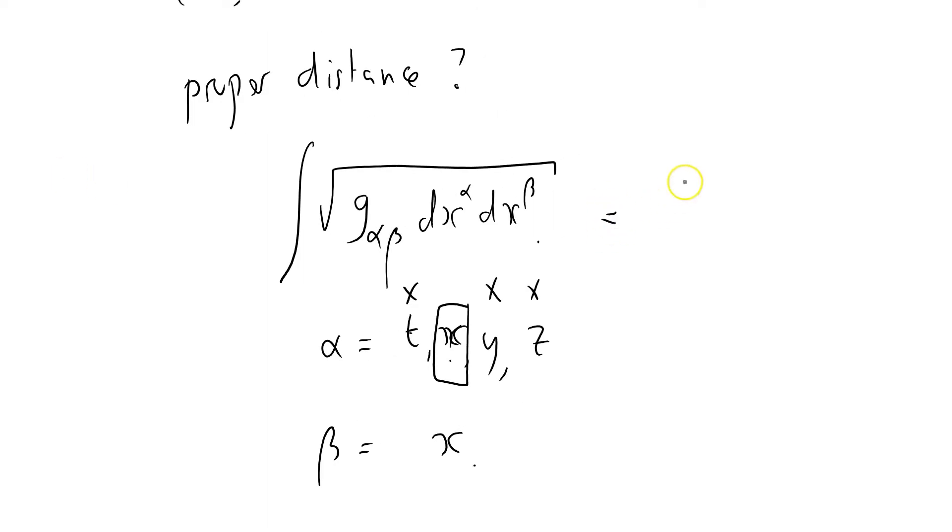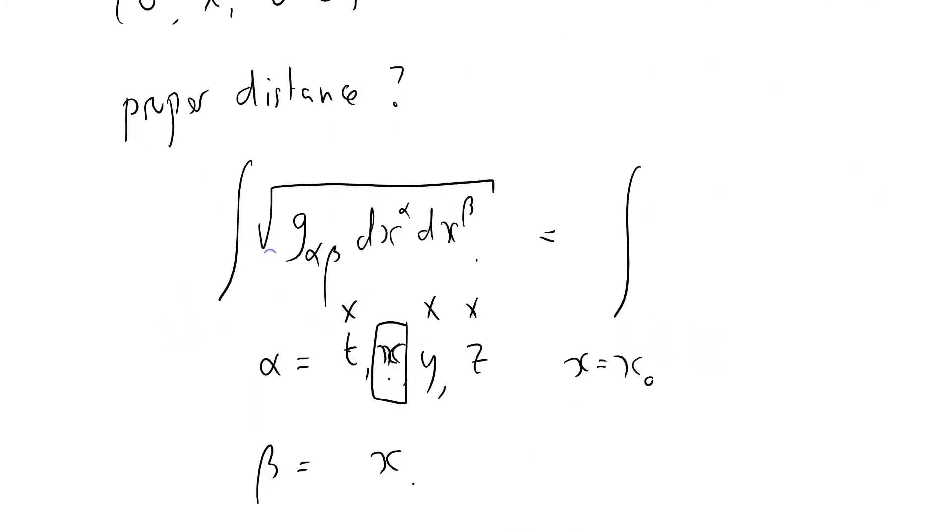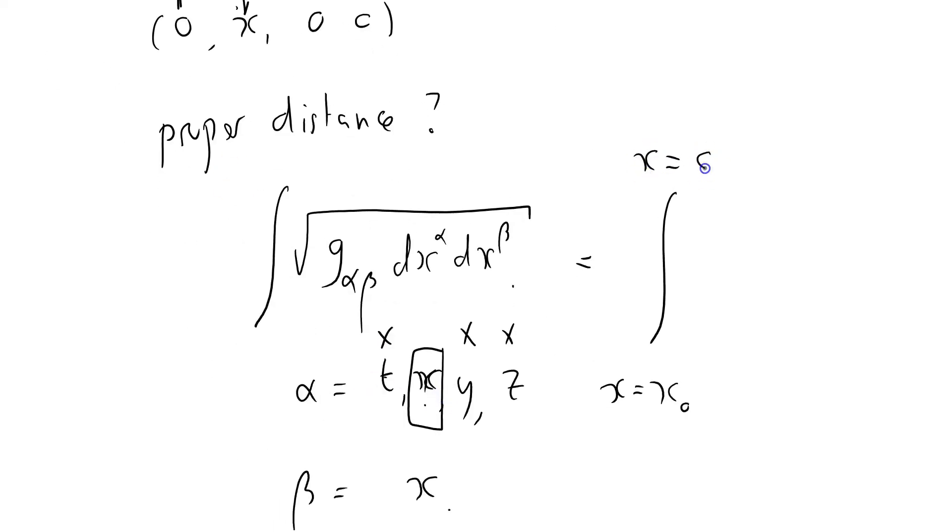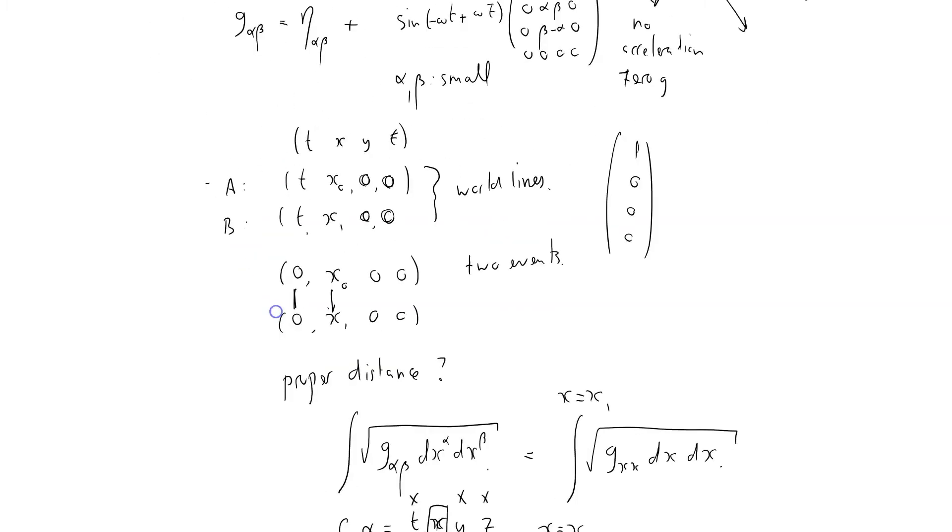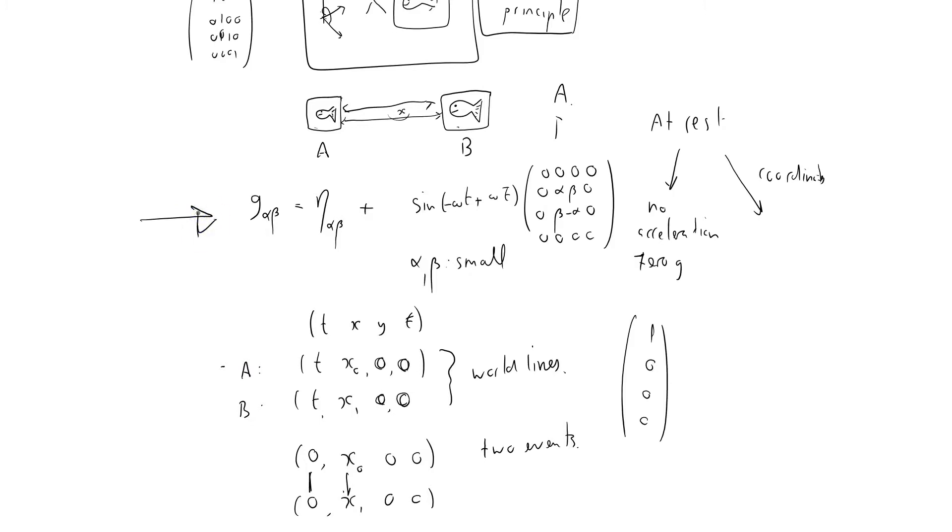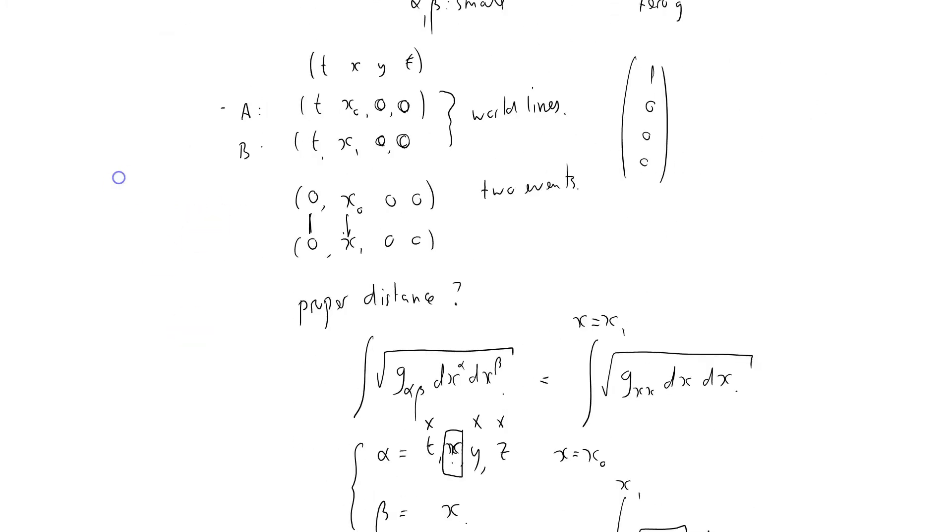Time is unchanging. X changes because it goes from X naught to X one from one fish tank to the other, but Y and Z coordinates are constant. So the only alpha coordinate we need to think about is X, and the only beta coordinate is X as well. So it looks like the integral from X equals X naught for fish tank A to X equals X one, times the square root of G X X dx. Now I can start to think about what the square root of G X X is.